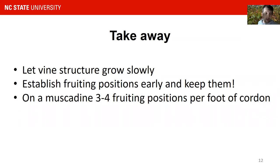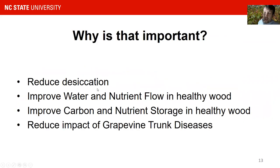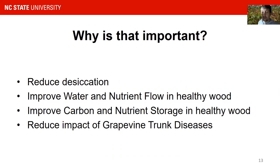You establish your fruiting positions through training and let those structures grow through pruning, and this is what we're going to learn today. Now the question becomes why that is important. That is important to reduce desiccation in the wood, which means to reduce the amount of dead wood you will have in the vine. The more big cuts you make and the closer they are to your permanent structures, the more dead wood you will have in your vine, which then impacts sap flow, water flow, as well as carbon and nutrient storage, which you will need for good fruit development a year later.